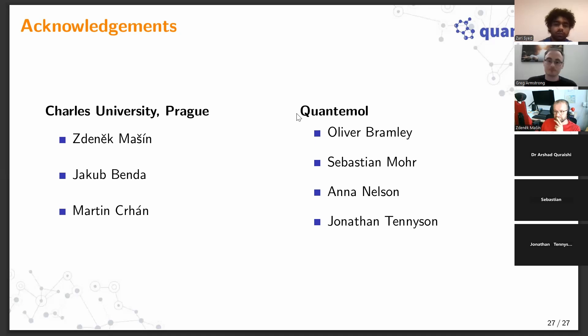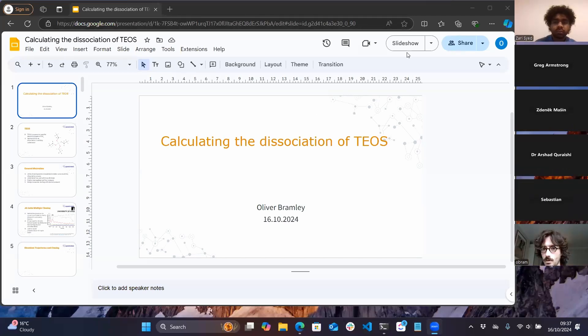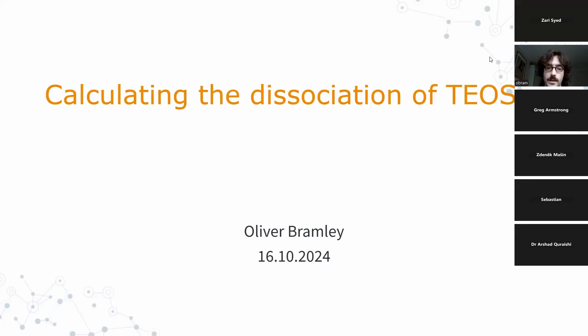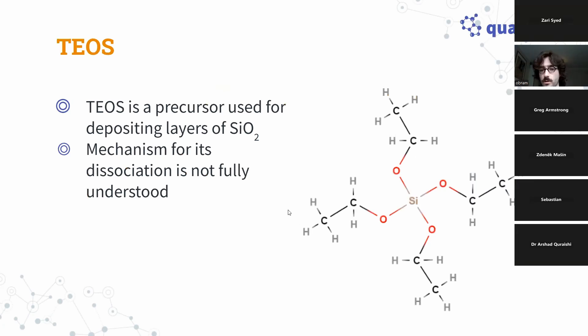Next is Oliver Bramley from Quantumall, who will be talking about calculating the dissociation of TEOS — a molecule used as a precursor to deposit layers of silicon dioxide when making chips. It's already used in industry, but we don't really understand the mechanism by which...